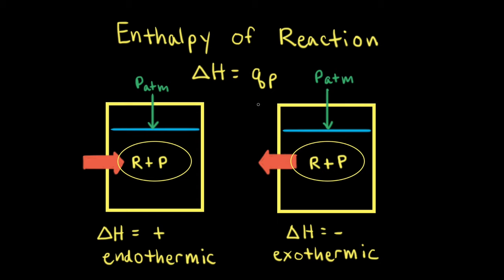The change in enthalpy for a chemical reaction, delta H — we could even write delta H of reaction — is equal to the heat transferred during a chemical reaction at constant pressure. So delta H is equal to QP.